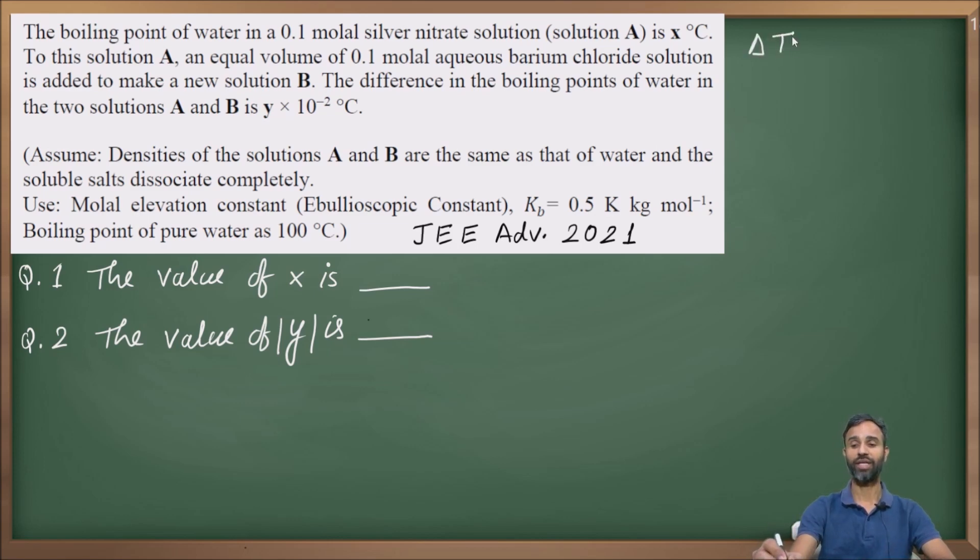The formula is delta Tb equals Kb m. But this formula is applicable to non-volatile solute as well as non-electrolyte. And if solute is electrolyte, then this formula becomes delta Tb equals i Kb m. What is i? i is van't Hoff factor and it is applicable for electrolytes. Because here salts are given and it is written that soluble salts dissociate completely.